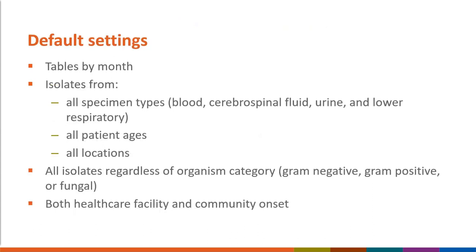Running the antibiogram report without making any modifications will produce a default report. This report will show tables by summary month, so a table will be generated for each month. These tables will include isolates from all specimen types, all patient ages, and all locations — regardless of organism category — and will include both healthcare facility onset and community onset data.